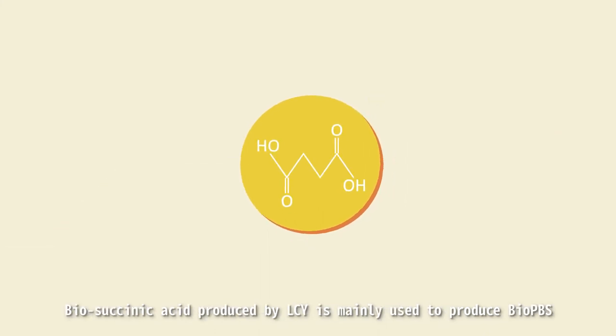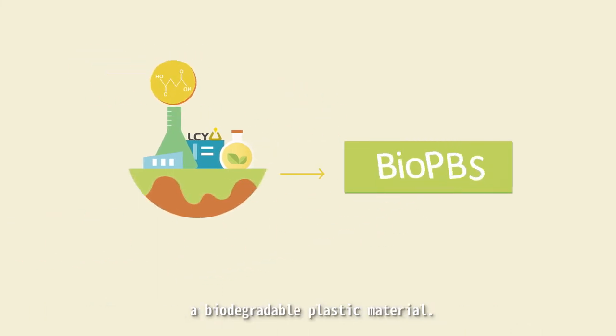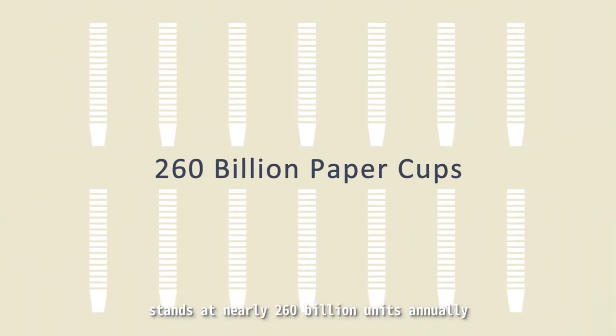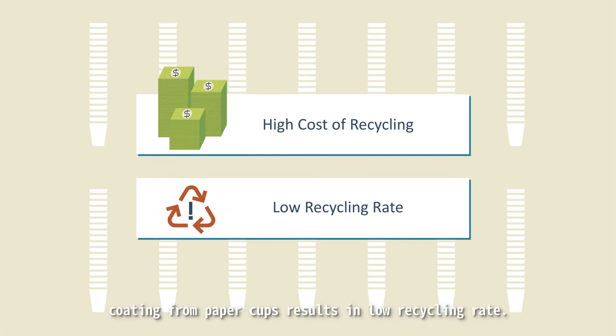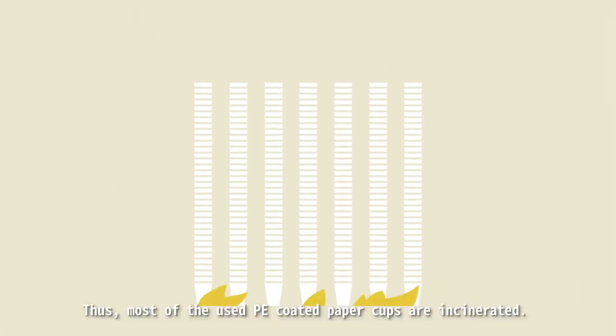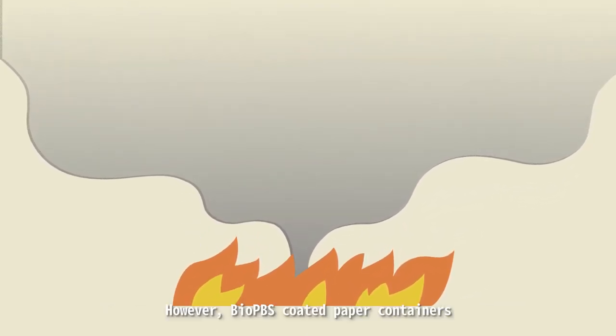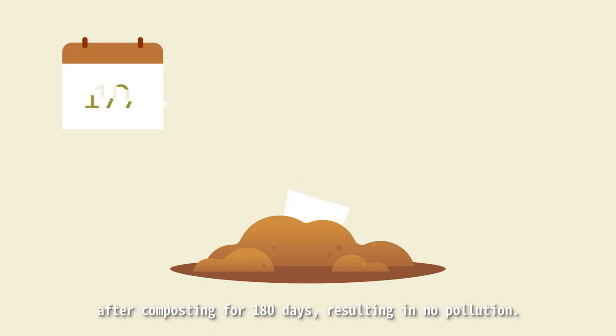Bio-succinic acid produced by LCY is mainly used to produce BioPBS, a biodegradable plastic material. Global consumption of single-use paper cups stands at nearly 260 billion units annually. The high cost of separating polyethylene coating from paper cups results in low recycling rate. Thus, most of the used PE-coated paper cups are incinerated. However, BioPBS-coated paper containers can be biodegraded into water and carbon dioxide after composting for 180 days, resulting in no pollution.